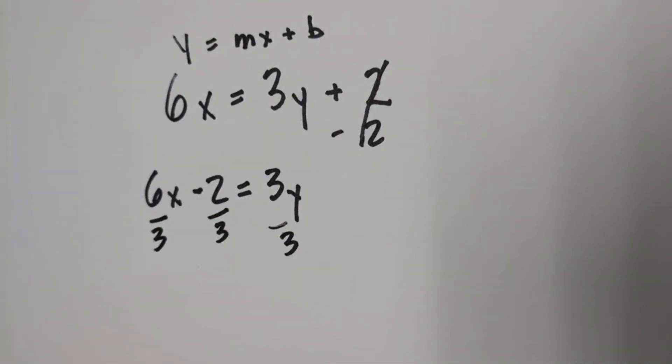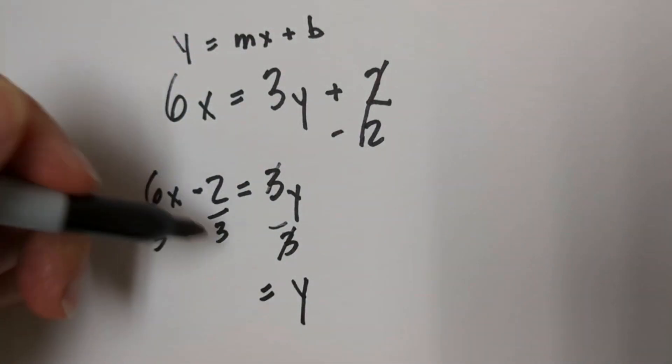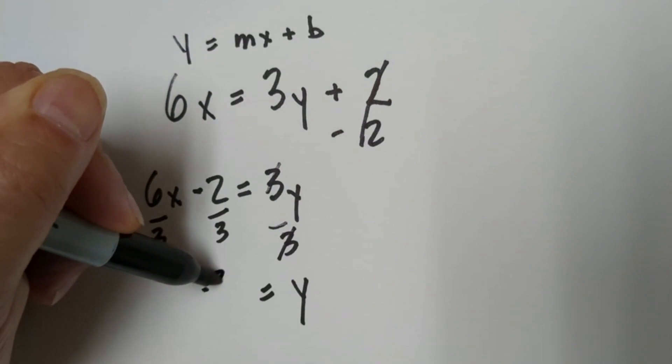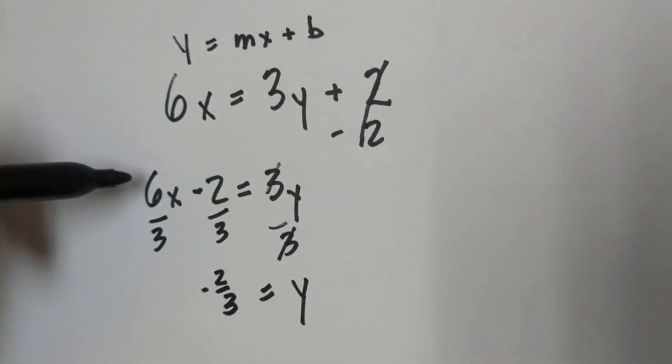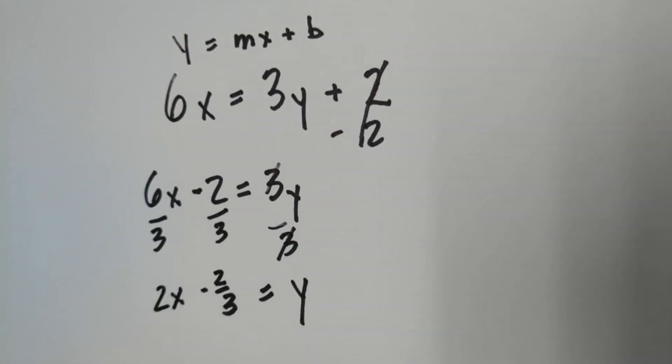So when we do that, these cancel. So it's y equals negative 2 thirds, and then 6 divided by 3 is 2. So it would be 2x minus 2 thirds equal y.